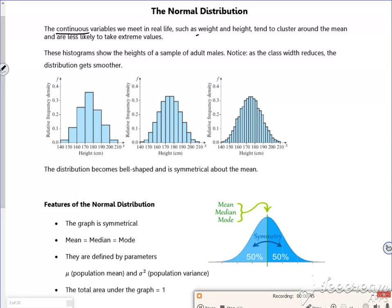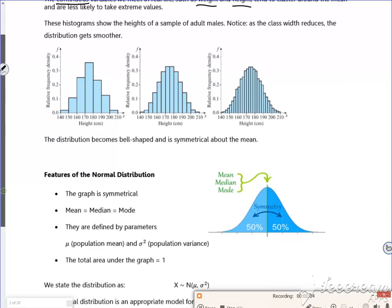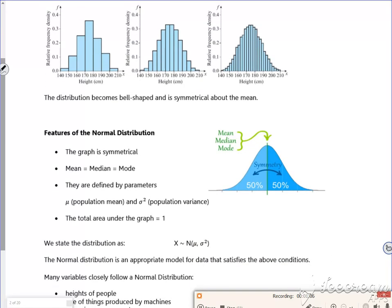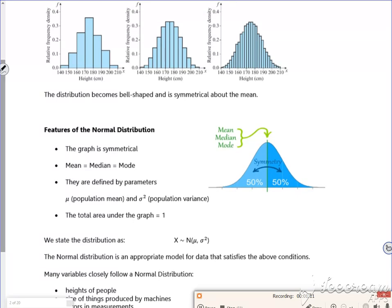It's stuff like weight and height and speed and stuff like that. So here you've got some histograms which show the probabilities. The idea being that the more sections you've got, the more the shape resembles what we call a bell curve, which is this one here. So if you had all the data individually done as opposed to clusters of like 140 to 150 or 140 to 145, you get that shape there.